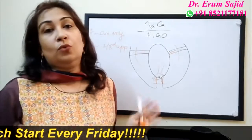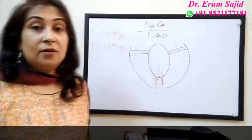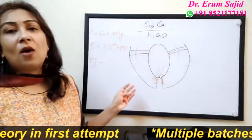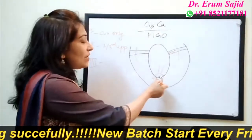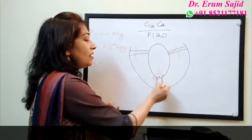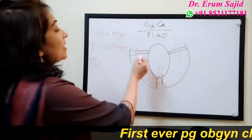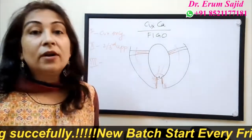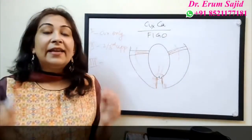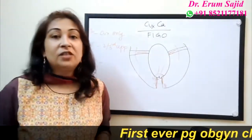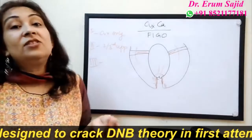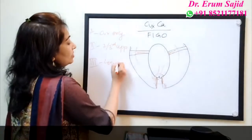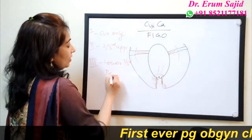What is stage three? After the upper two-thirds vagina, where does the cancer go next? It goes to the lower one-third vagina as well. And since stage two said it reached the parametrium but not the pelvic wall, stage three means it has reached the pelvic wall. So stage three involves the lower one-third vagina and the pelvic sidewalls.